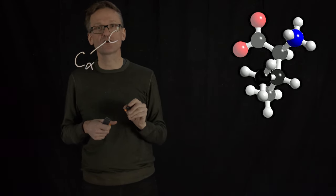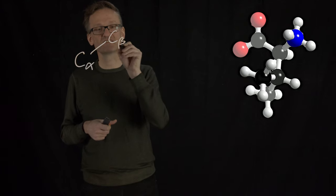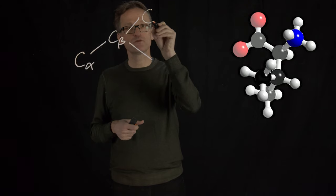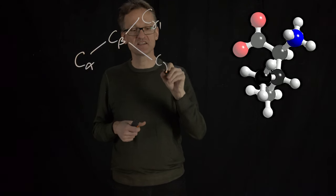Can you imagine what I would call the second carbon in the side chain here? That's right, C-beta. And in this particular case, I have two of them, and that would mean that I call them C-gamma-1 and C-gamma-2.